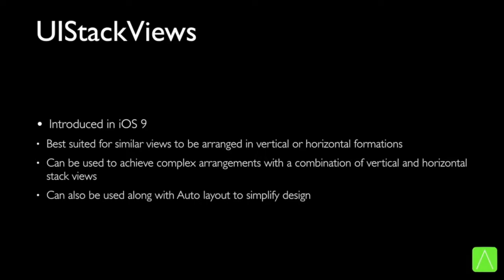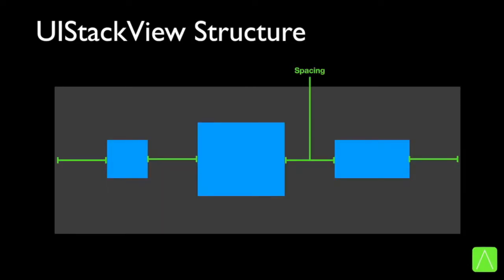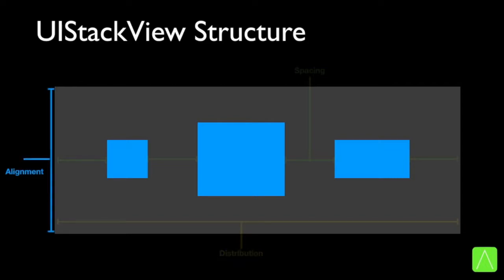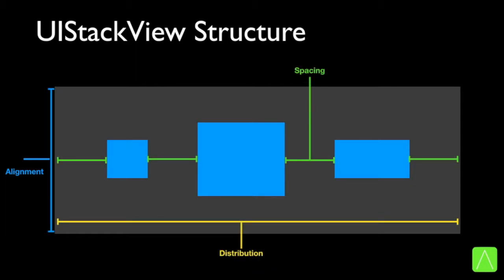One of the easier ways of achieving auto layout is with the help of UI stack views. These were introduced in iOS 9 and allow us to stack up views vertically or horizontally. By combining different orientations, we can achieve fairly complex designs easily. Stacks have a few settings: spacing, which specifies the space between all views in a stack view; distribution, which determines the way the area within the view is utilized; and alignment, which specifies the vertical positioning of the views on screen.